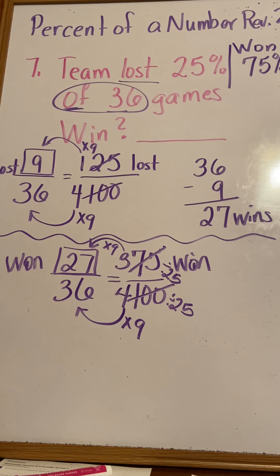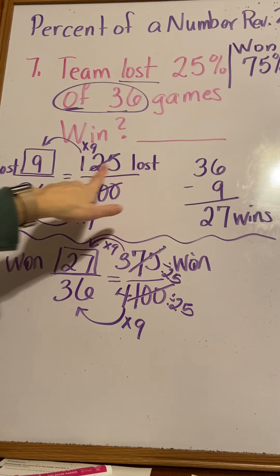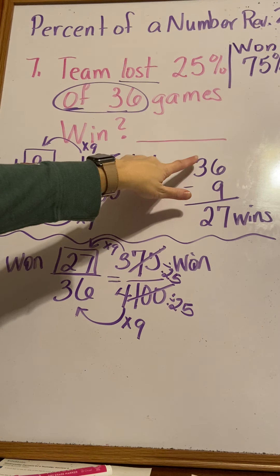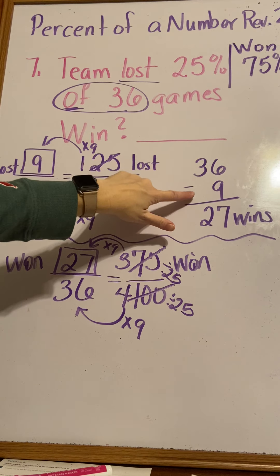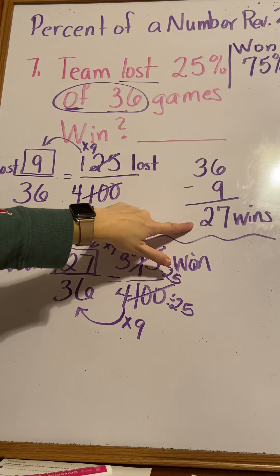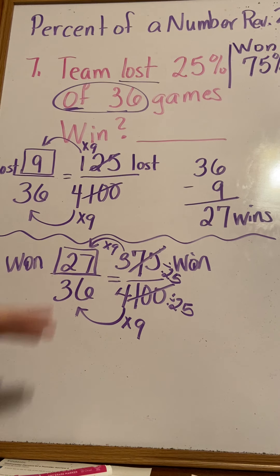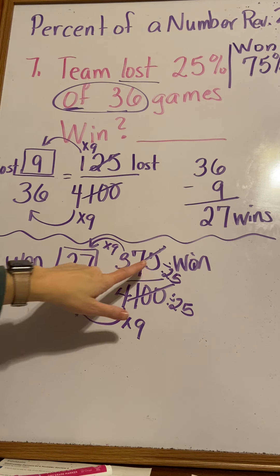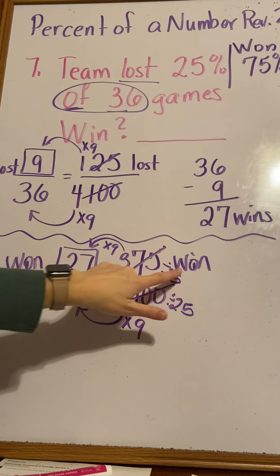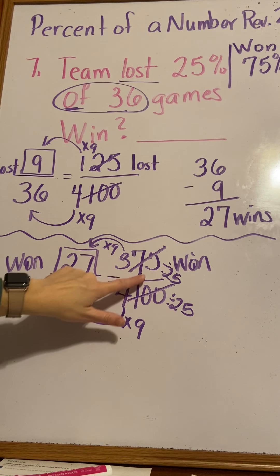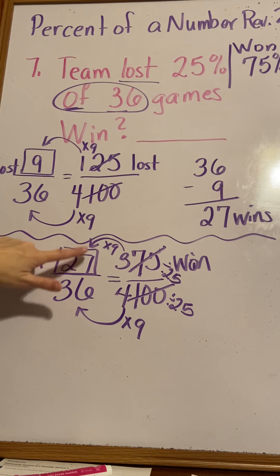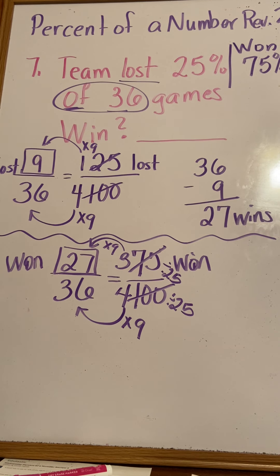That's two different ways you can solve that problem. You can calculate how many games they lost, and then subtract the games they lost from the number of games they played to get how many they won. Or you could make it a little bit shorter - calculate the percentage of games that they won, and then find the answer for the number of games that they won.